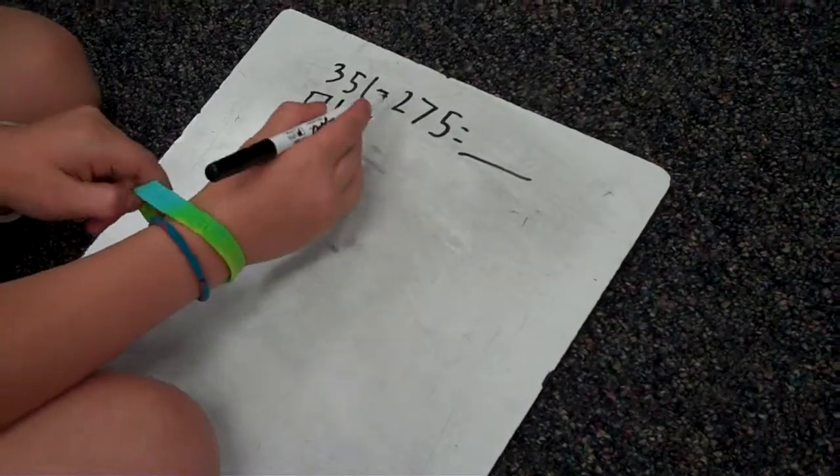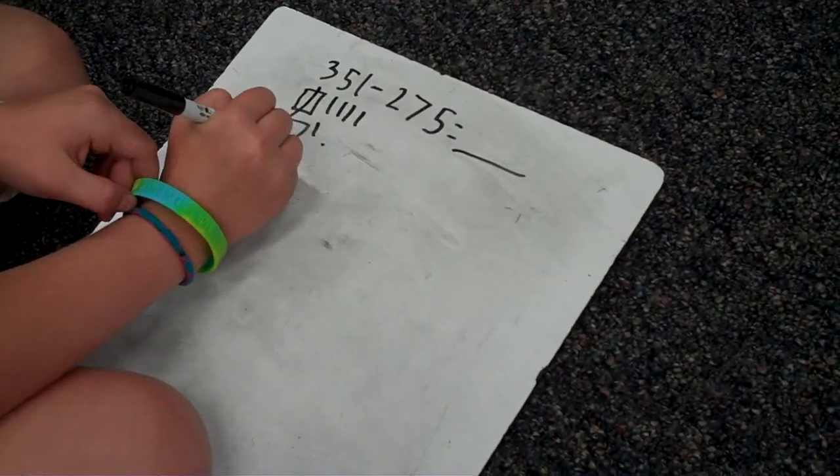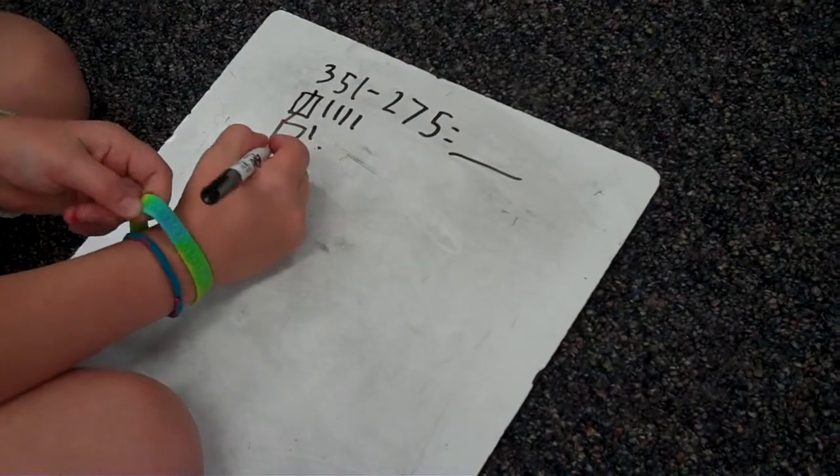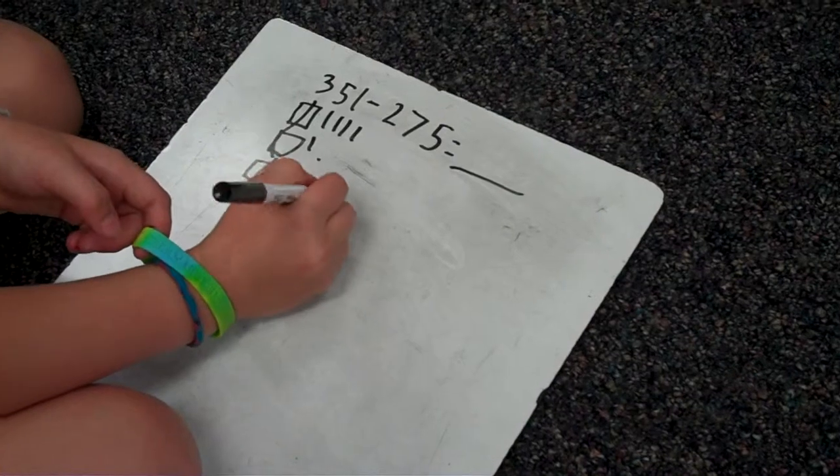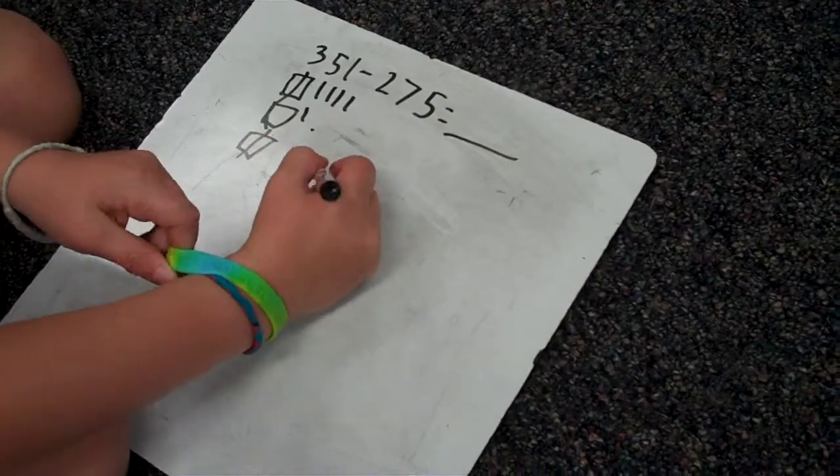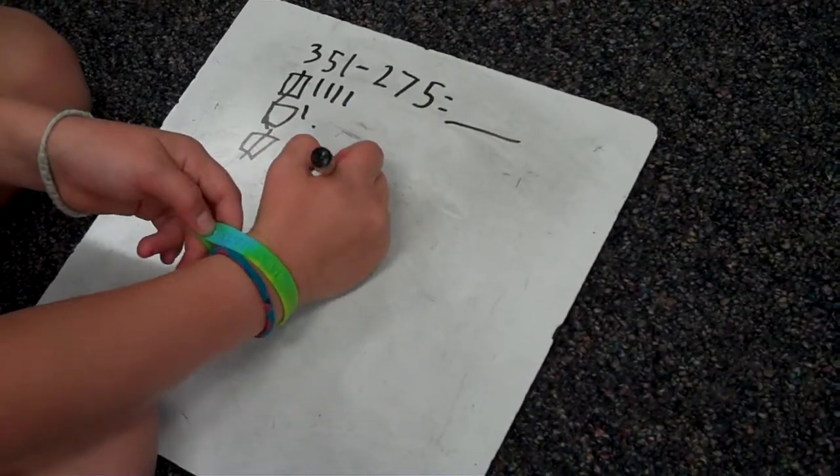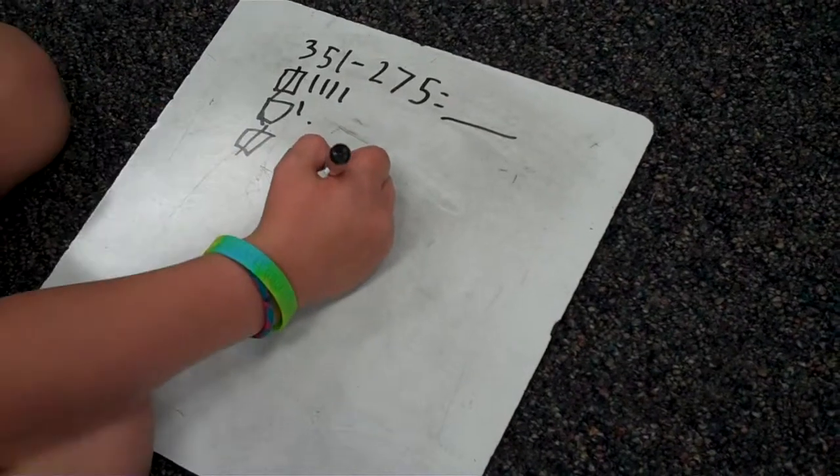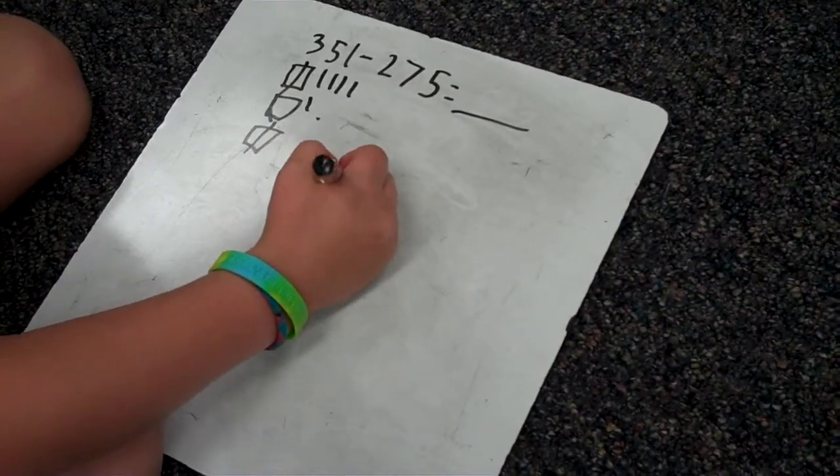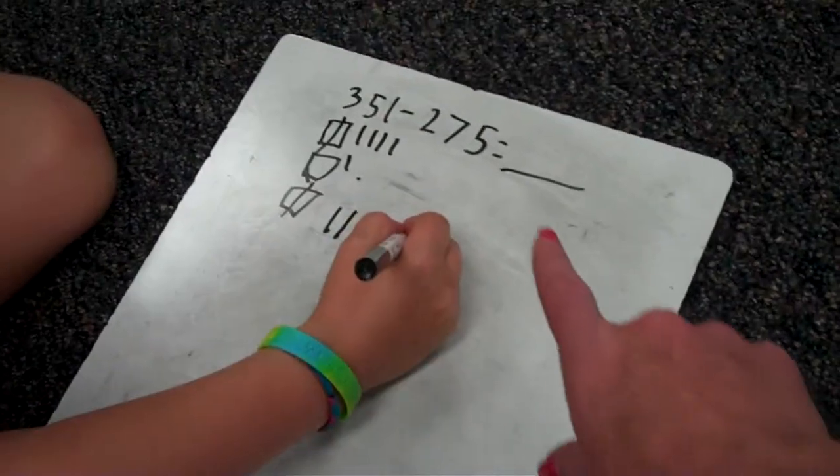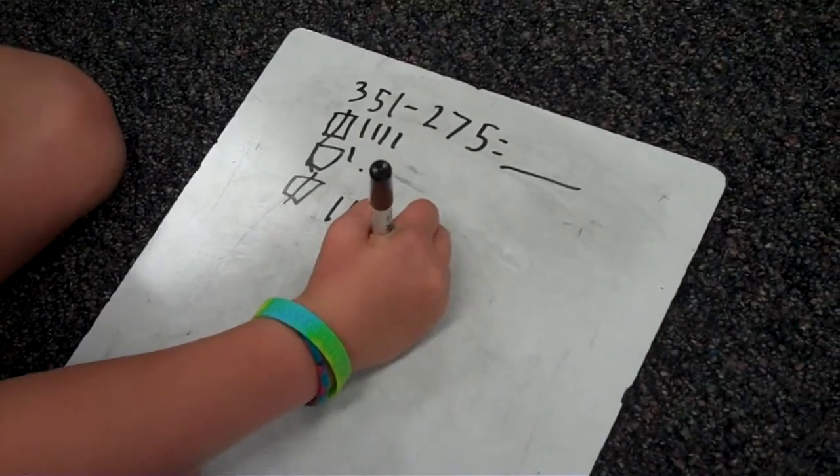So then you have two, you take away two, and you have seven, but you don't have seven, so you cross out one of these, and then you make 10 columns blocks.